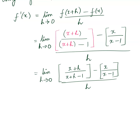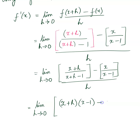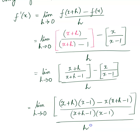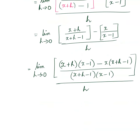This leads to a complex fraction situation, so we're going to focus on the numerator. You could pause and do it on your own, come back, and fast forward to check the answer. Taking the LCD — basically cross multiplying.